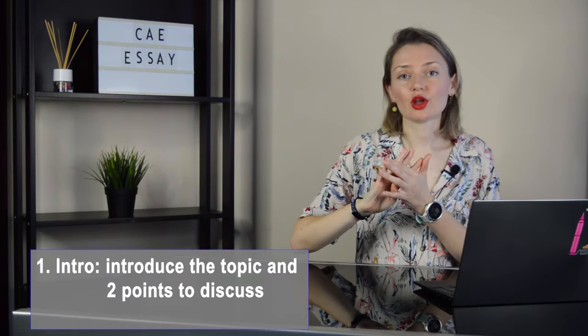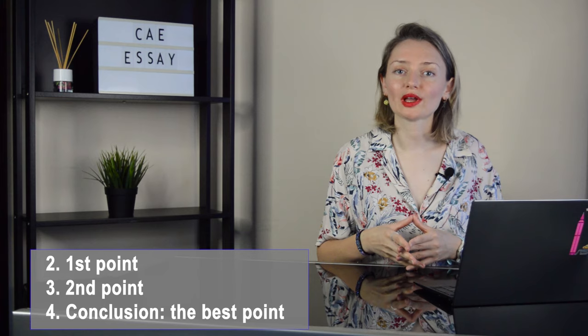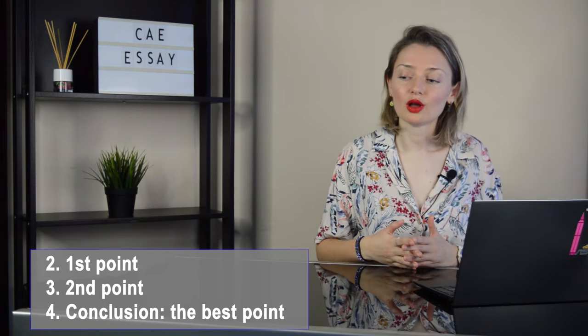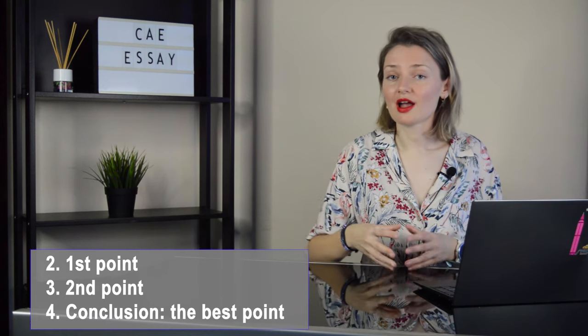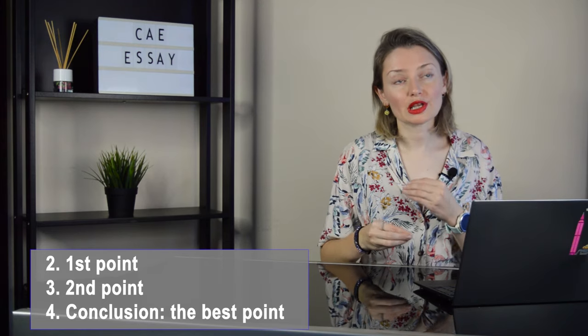There are three bullet points but you need to pick two — you have to rule out one point. The most common structure of your essay is the following: four paragraphs. In the first one you would introduce the topic and your two points. The second one would be focused on the first point. The third one would be focused on the second bullet point. And in the conclusion you would decide which point is the most important or the most effective one. In the sixth part of the video we're going to look at one sample essay so that you can get an idea of how it's written.